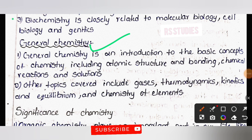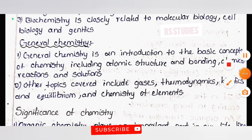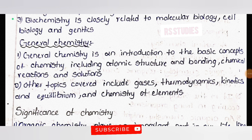So to summarize, we discussed the five major branches of chemistry: organic, inorganic, physical, analytical, biochemistry, and general chemistry. Thank you for watching.